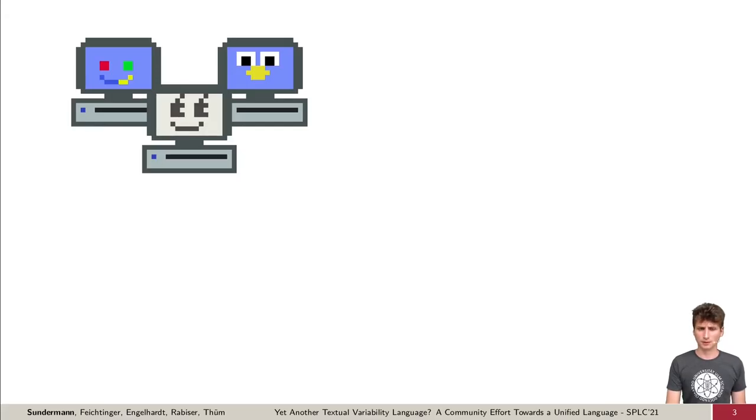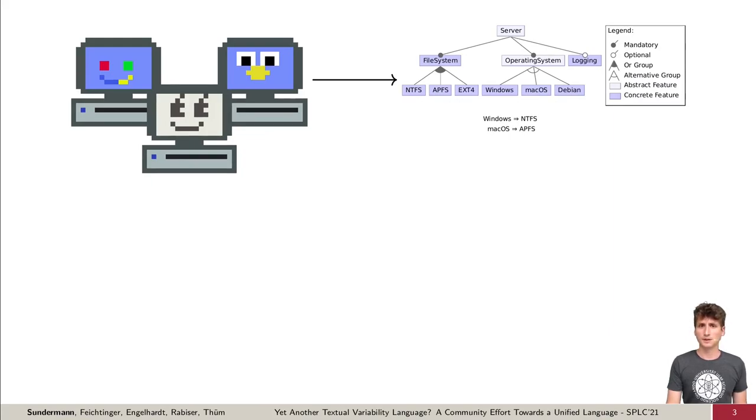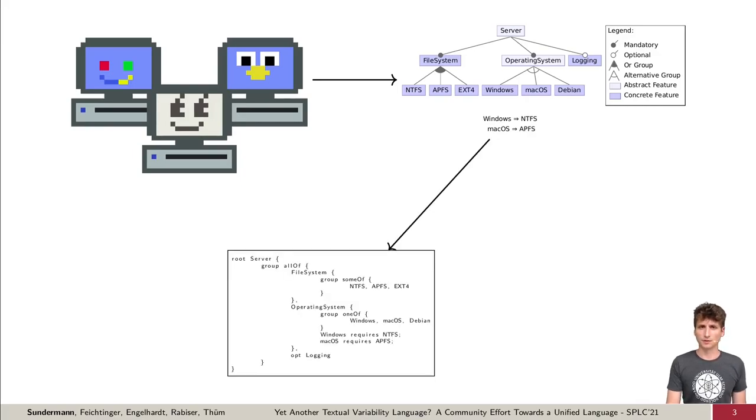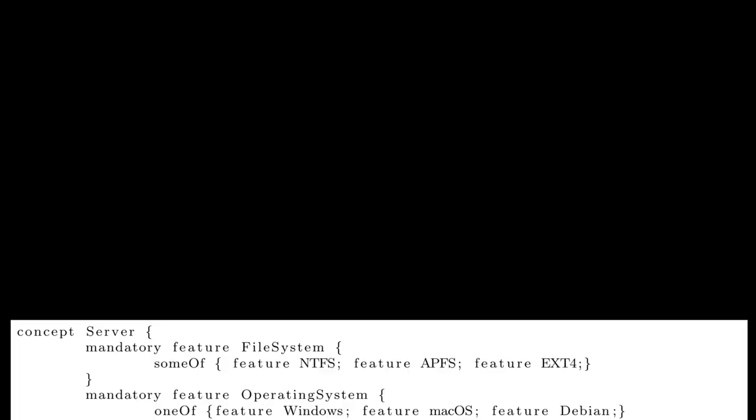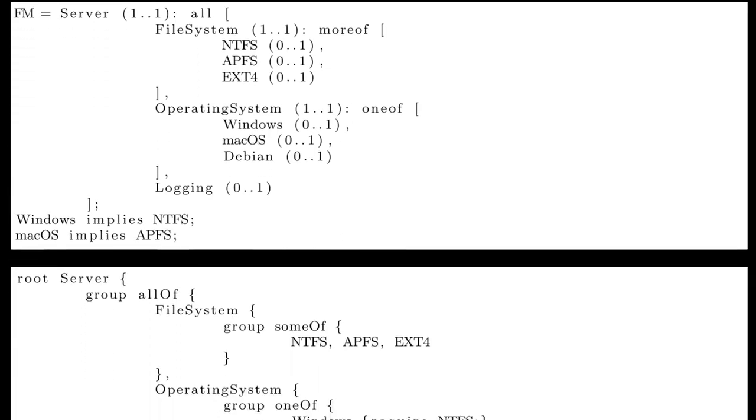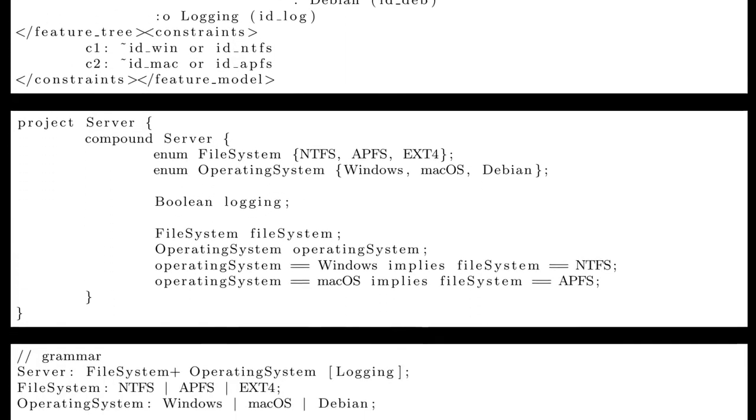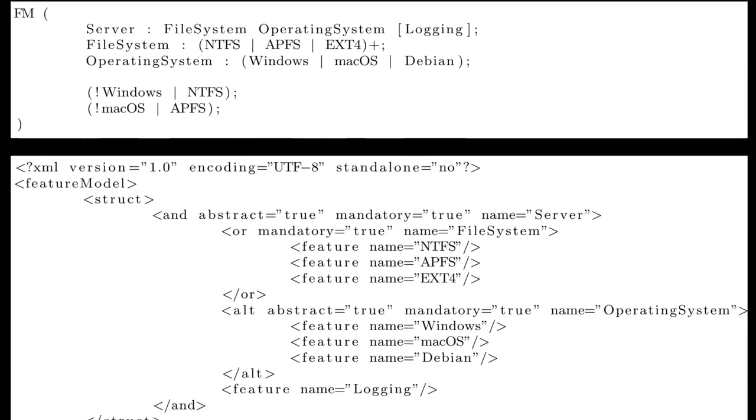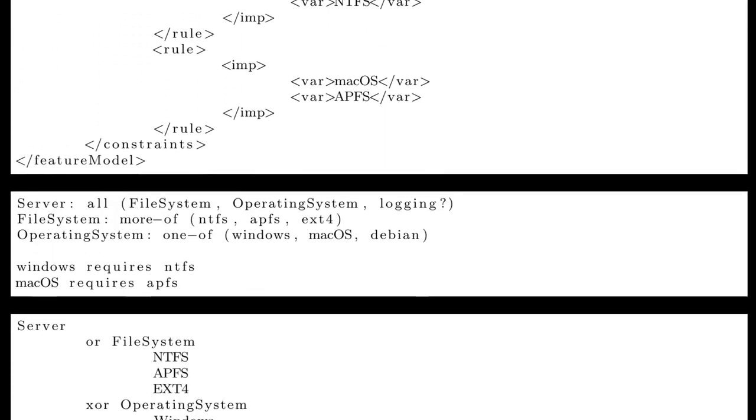But why do we even need a unified language? Typically, we have a configurable system like this product line of different servers. In general, there are some requirements on how components or features of these servers can be combined. Such requirements can be specified using a variability model or here a feature model. Those are then stored in a textual format to be used in tools for variability modeling. The problem is that not a single, but many variability languages are considered in literature. Here we can see this same feature model in 13 different notations. And many of those notations are used in different variability modeling tools.